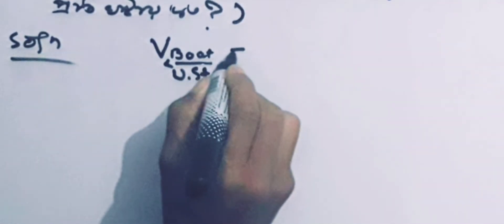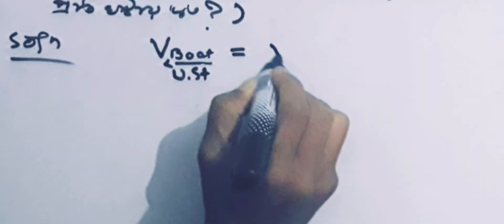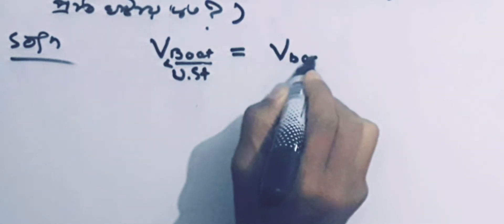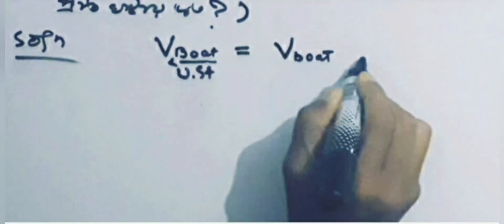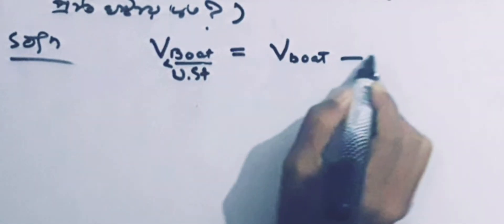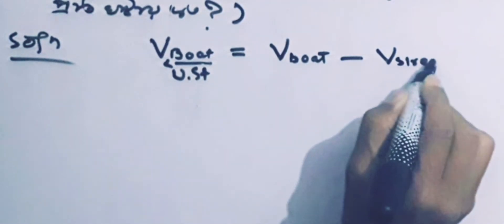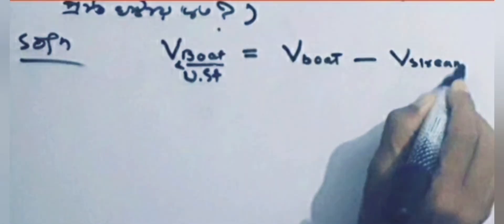This equals capital V suffix boat — meaning velocity of the boat in still water — minus V suffix stream, meaning the speed of the stream or current.